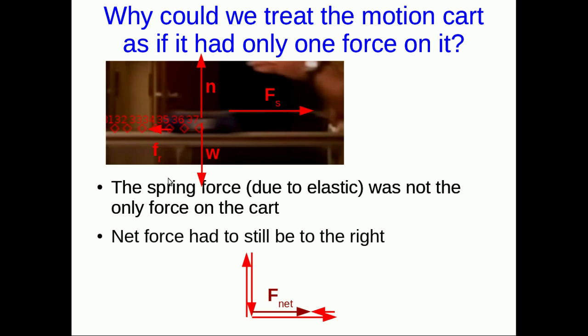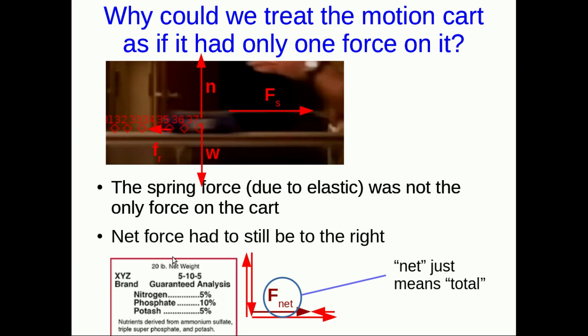And what we're doing here is just a vector addition. There is the vector addition of the normal and the weight and the spring force and the friction. And so there is our F net resulting from that vector addition. And I'm using this word F net. The net force. Net just means total. It's what you get when you add everything up. So just like when you look at packaging of something you're buying and it gives you a net weight, that is simply the weight of all the contents of the package. The total weight.